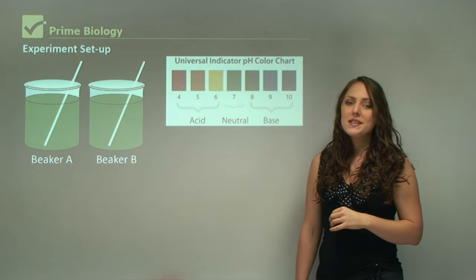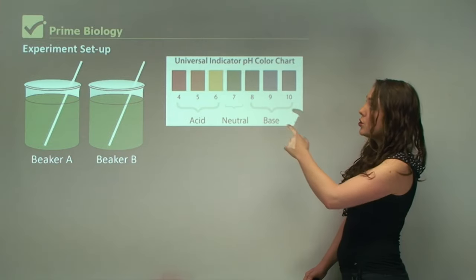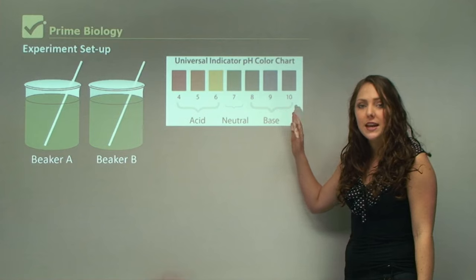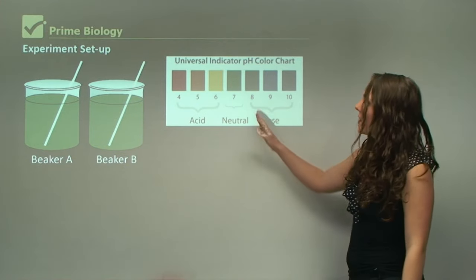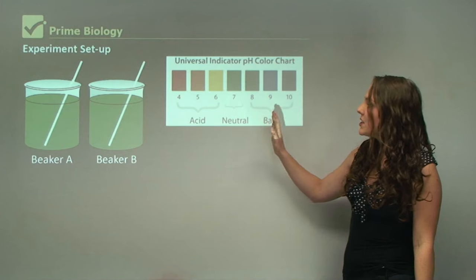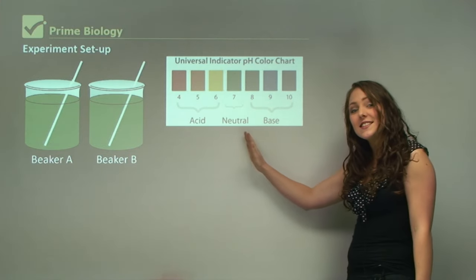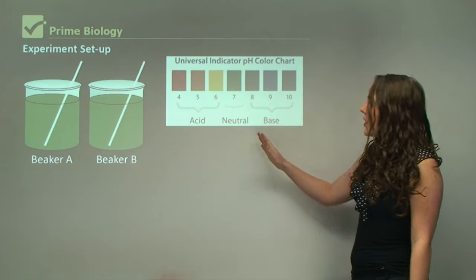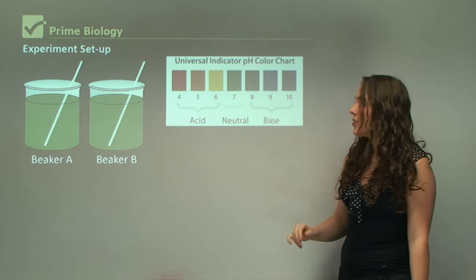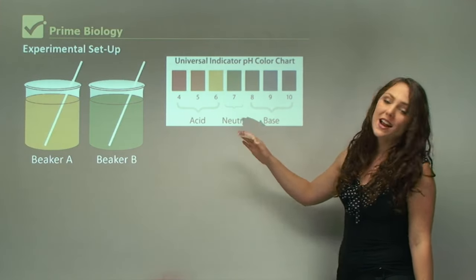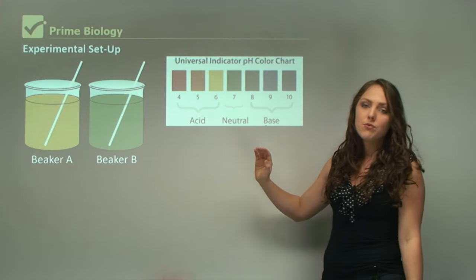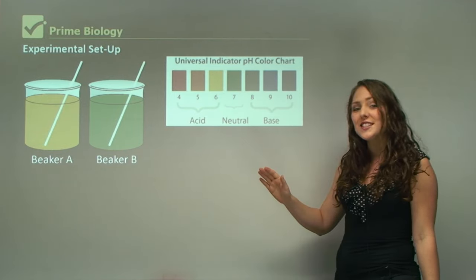The experiment setup. We can see here, we've got two beakers, the universal indicator pH color chart. Remember, this is going to be different for each pH universal indicator. At seven, we have a green color, and we're expecting it to go more in the acid environment instead of the basic environment. So if it's going from seven, we're expecting a color change. We can see that after we breathe in the straw for 40 seconds, it has changed to a different pH. This is a pH of six.